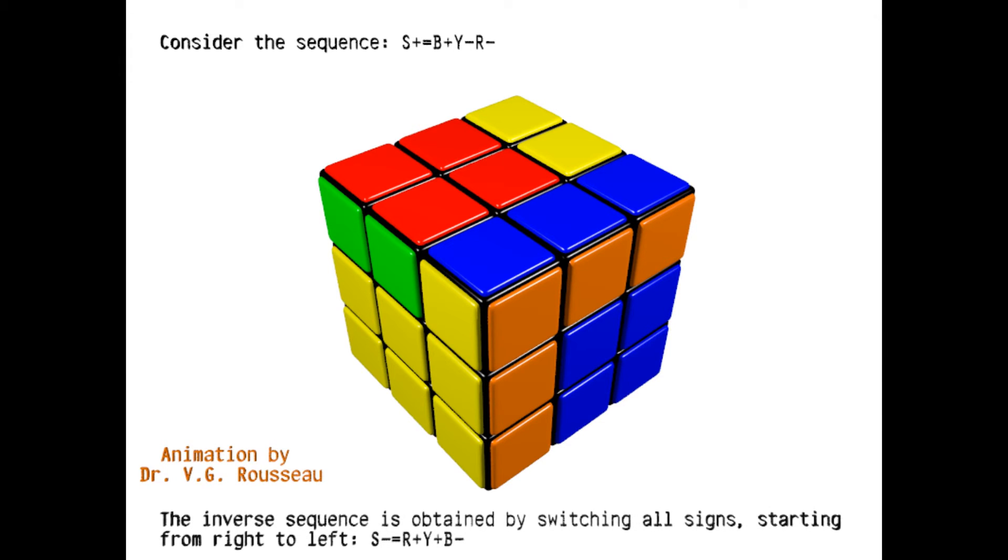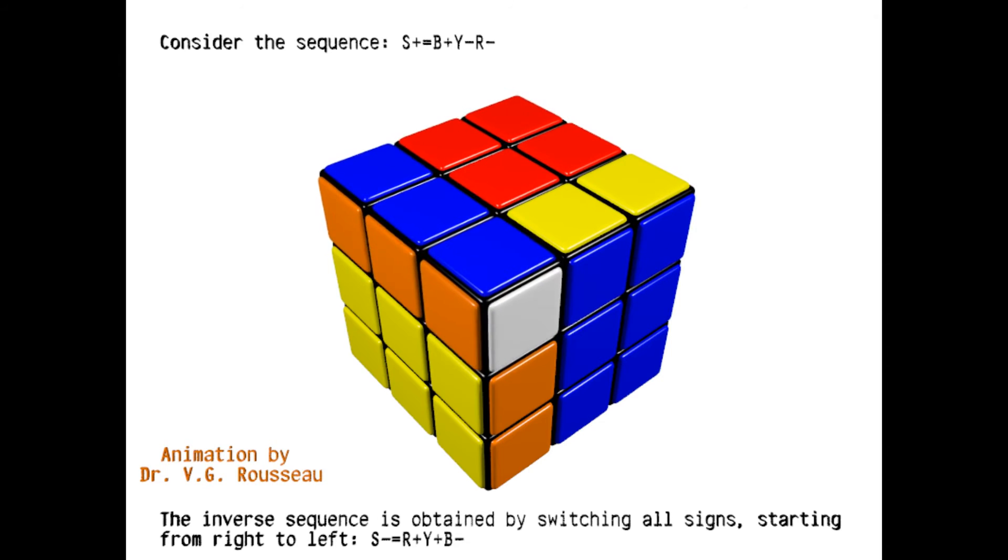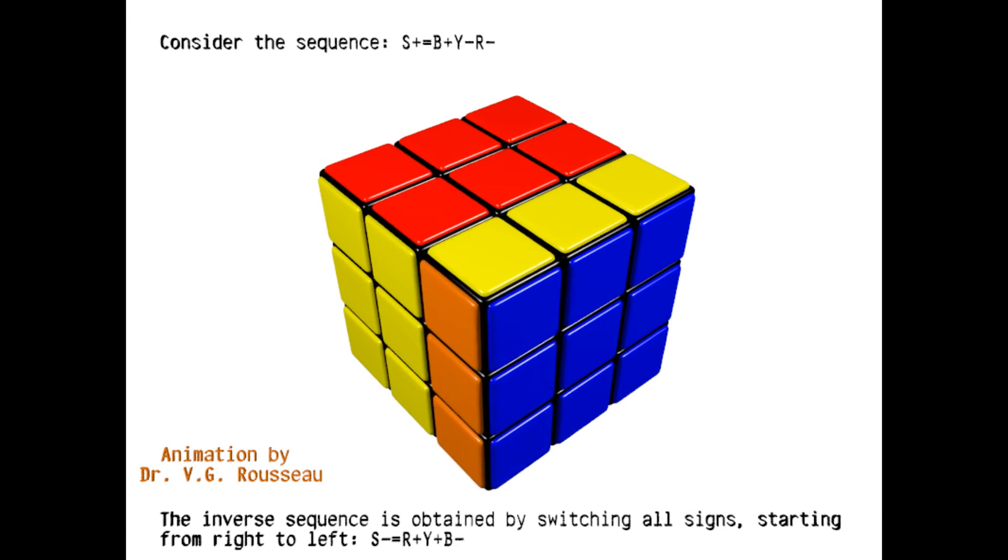The inverse sequence S-, by definition, undoes what the sequence S+ does. Since S+ ends with a rotation red negative, the inverse sequence S- must start with a rotation red positive. So the inverse sequence is obtained by switching all signs of the original sequence and reading it from right to left. Thus, in the present case, S- is equal to red positive, yellow positive, blue negative.